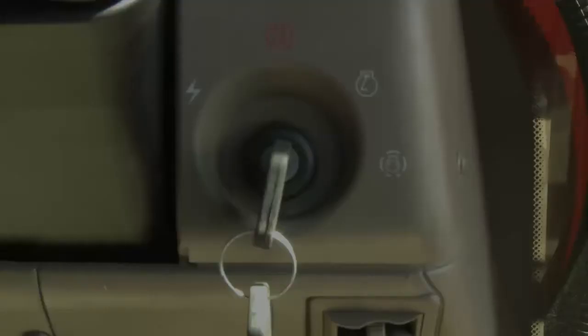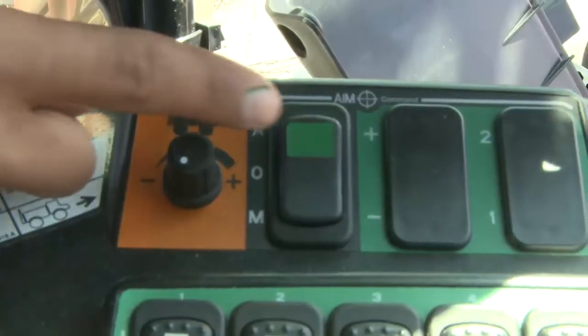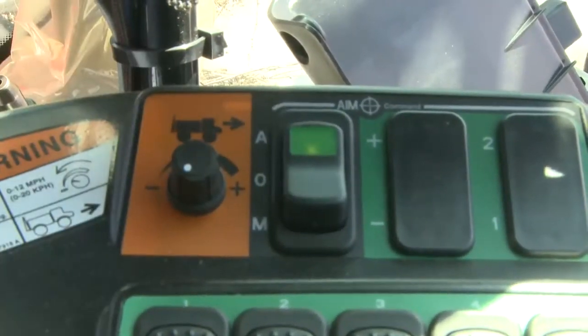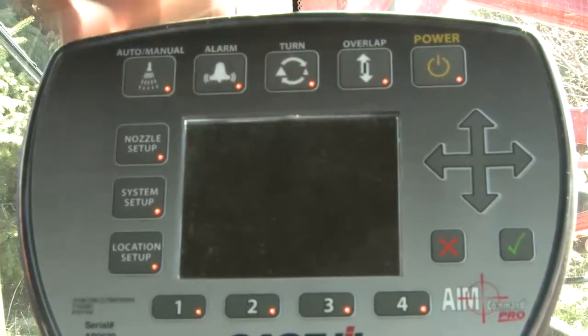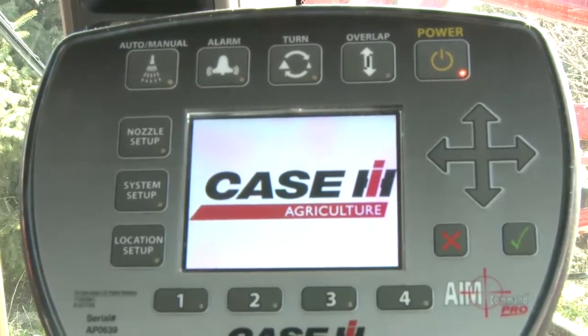To ensure consistent start-up, try and do the same sequence every time. We'll turn the key and wait for the Pro 700 to boot up, then we'll turn on the power switch that provides power and then we can actually power the ProView display up using the power key in the top right corner.